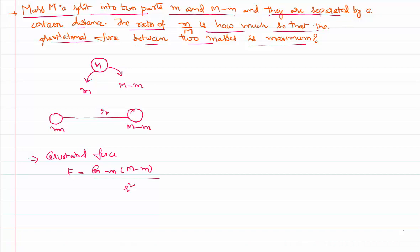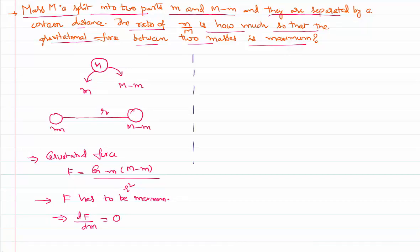This is the gravitational force as per Newton's law of gravitation. Now, for F to be maximum, its differentiation with respect to the variable mass has to become zero — that means dF by dm has to be equal to zero. In differentiation, if any function has to become maximum, its differentiation has to become zero.